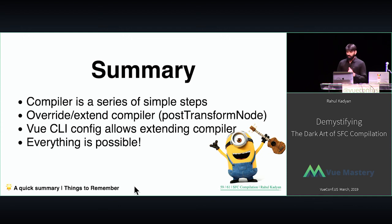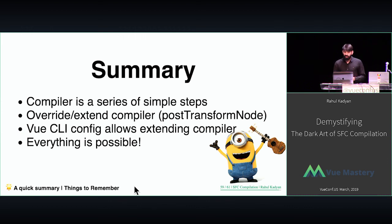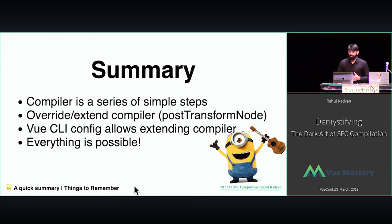We are towards the end of the talk, so let's do a quick summary. The compiler is not a very complex thing — it's just small simple steps combined together to build a very complex tool that allows us to have the developer experience we have now. If you look at the real parts of the compiler, they are pretty simple and straightforward. You can override and extend compilation behavior by writing post-transform nodes. There are more APIs you can hook into the compiler to do things not currently possible through the public API of the template. Vue CLI allows us to directly provide these transform hooks using the config. Everything is possible with Vue and its compiler.